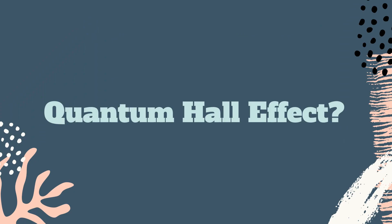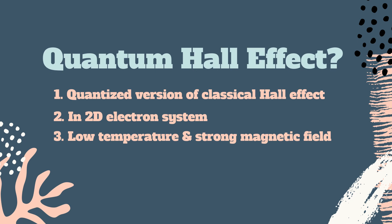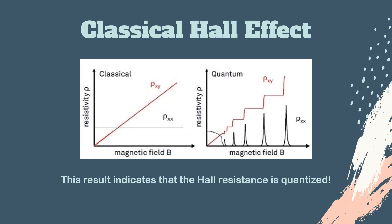The quantum Hall effect is a quantized version of the Hall effect, which is observed in two-dimensional electron systems with low temperature and strong magnetic field. Unlike the classical Hall effect, the Hall resistivity of the system does not vary linearly with the strength of the magnetic field. This result indicates that the Hall resistance is quantized.